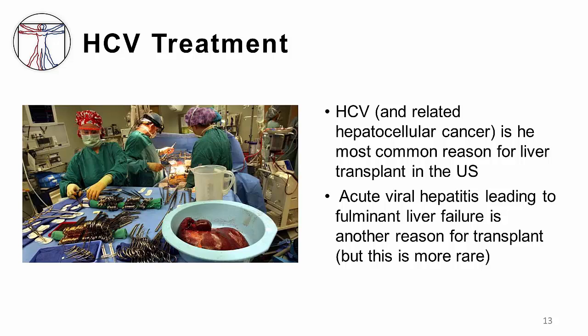For patients who unfortunately progress to cirrhosis and end-stage liver disease, liver transplantation is the only hope for long-term survival. Hepatitis C-related cirrhosis and hepatocellular carcinoma is the number one cause of liver transplant in the U.S. today. Like other hepatitis viruses, there are occasionally cases of acute fulminant hepatitis C requiring transplantation, but this complication is relatively rare.